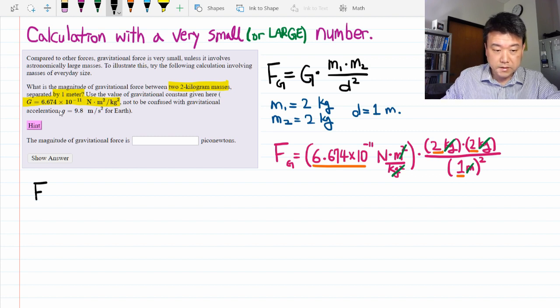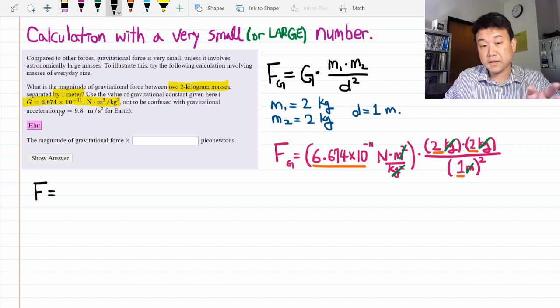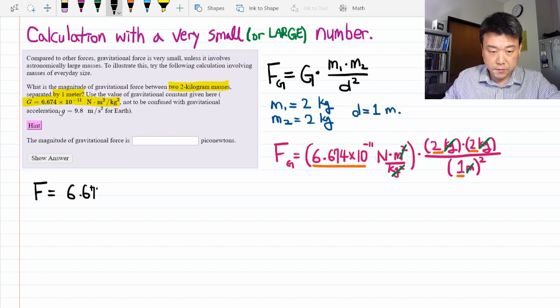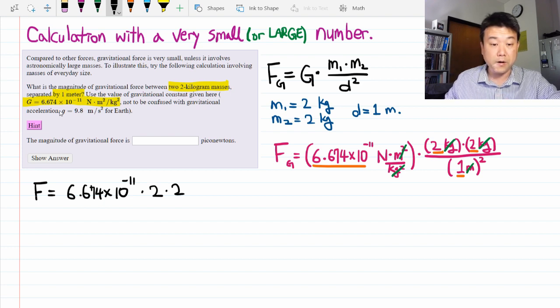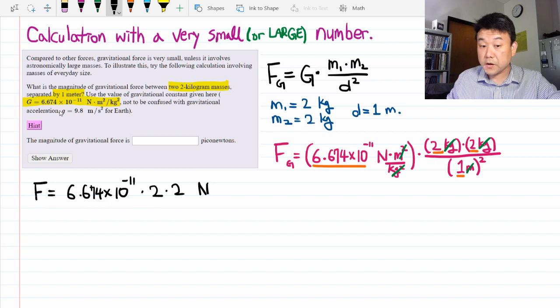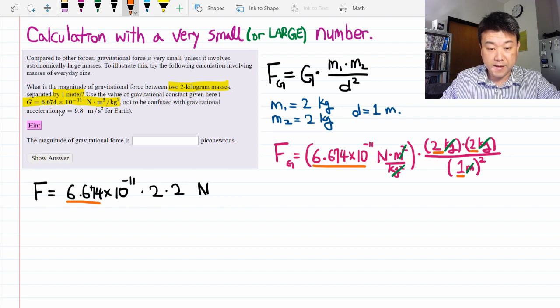So let me write this out. The force is, I'm just going to write down the numbers only, 6.674 times 10 to minus 11 times 2 times 2 and divide by 1. All of that in Newtons. So the first step is to separate out the things that come before the power of 10 and just multiply those.